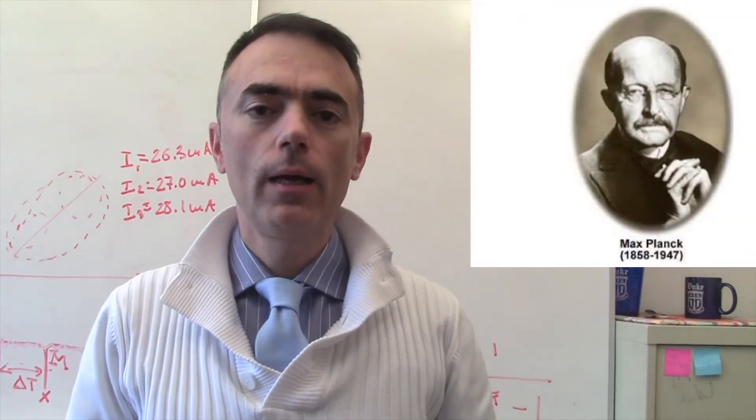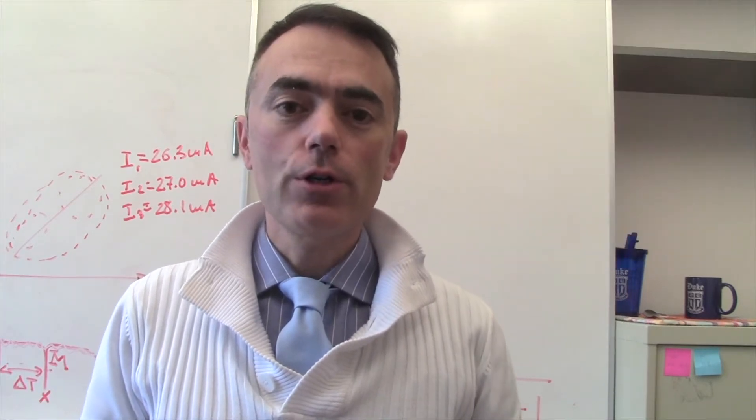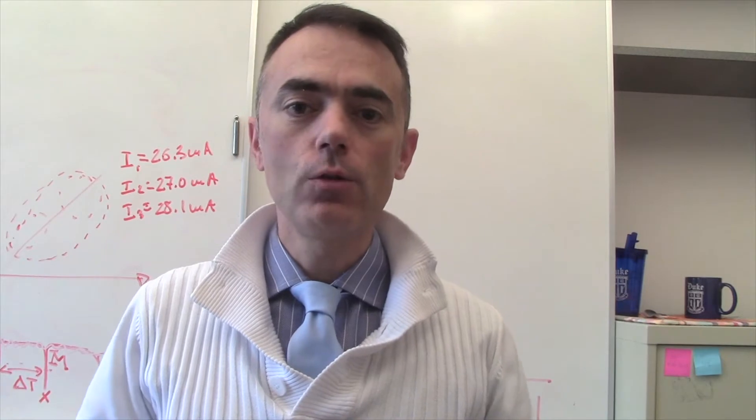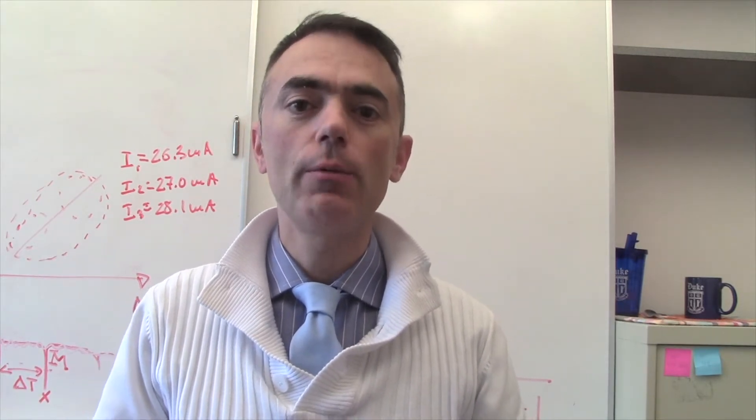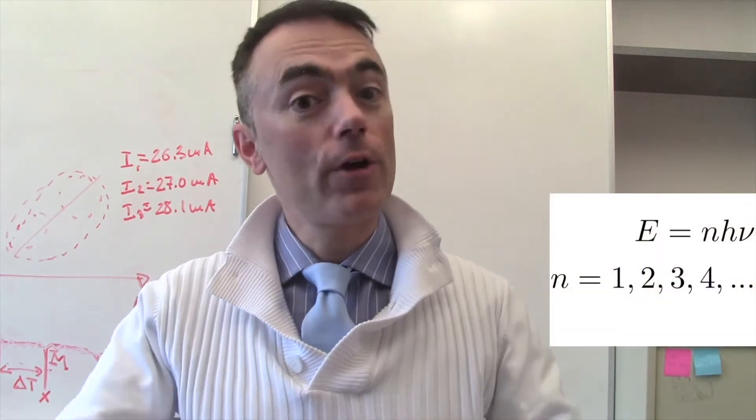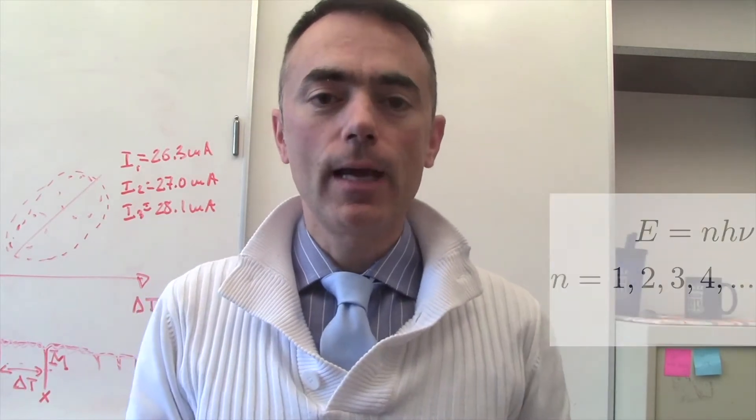In 1900, Max Planck, trying to describe black body radiation, found an expression but in order to give a physical meaning to that expression, he had to do what he called a desperate action, which was assume that energy is given in discrete packets, what he called quantum, instead of a continuous way as it was thought at that time.